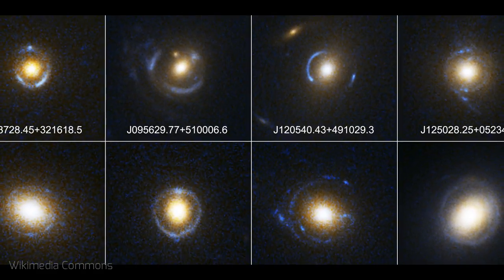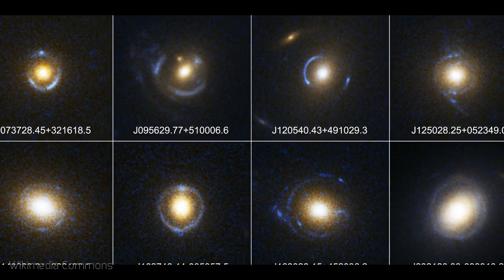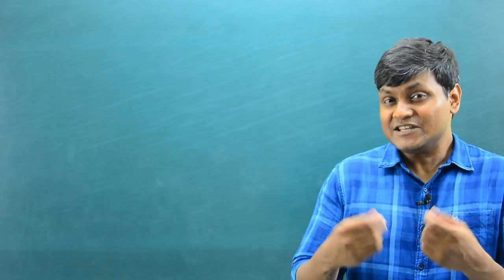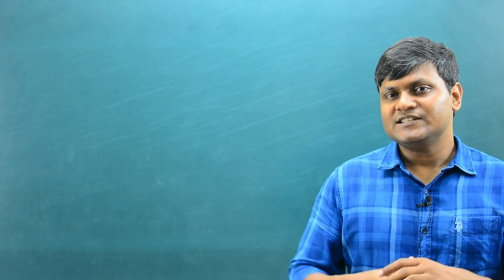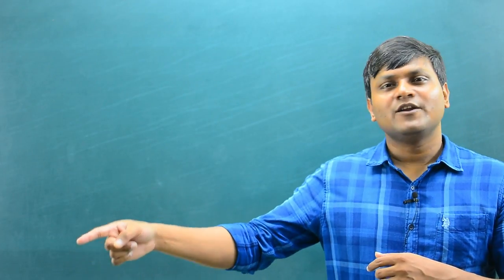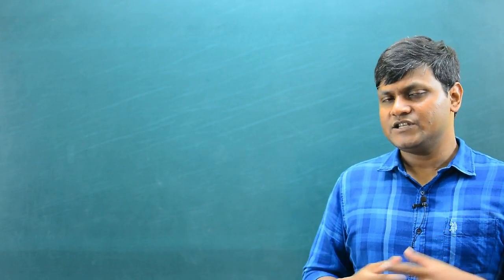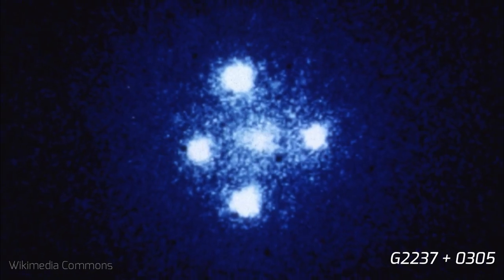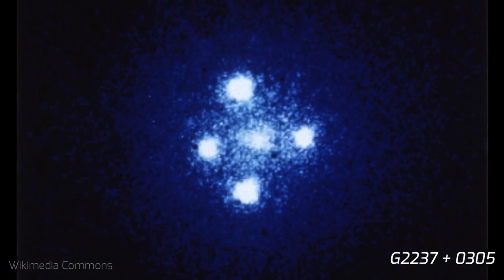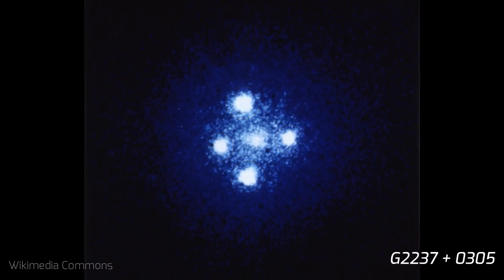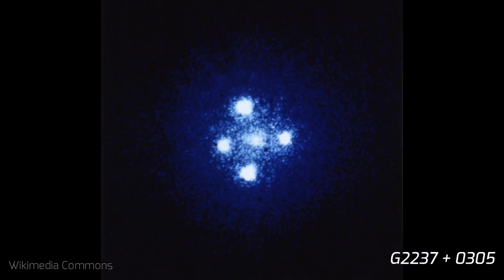Einstein rings are quite common when there is a uniform distribution of the gravitational lens and the distant object is on the line of sight. When the gravitational lens is non-uniform or elongated and does not lie on the line of sight to the distant quasar or star, instead of a ring or arc we see multiple images at different points. These four objects are in fact images of one particular distant quasar — this is known as the Einstein cross.